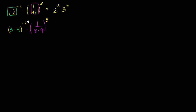We'll keep simplifying the left-hand side in terms of powers of 2 and 3, then match what a and b need to be. For the product of two numbers raised to an exponent, we know from exponent properties that this equals the product of each of those numbers raised to the exponent. So 3 times 4 to the negative 2 becomes 3 to the negative 2 times 4 to the negative 2.